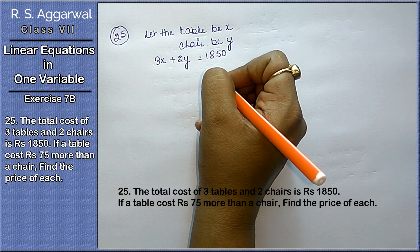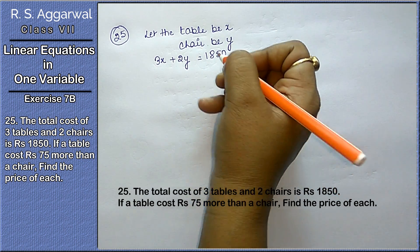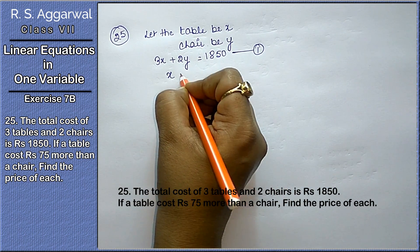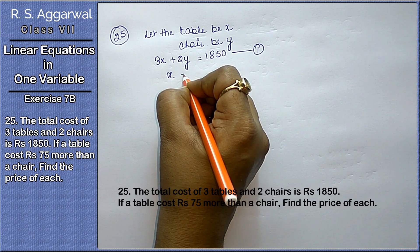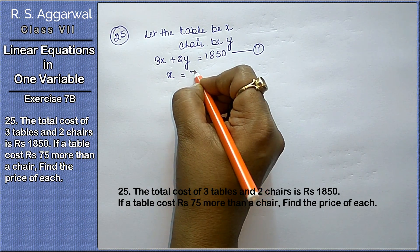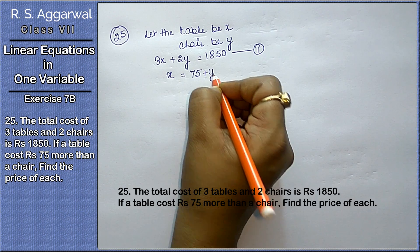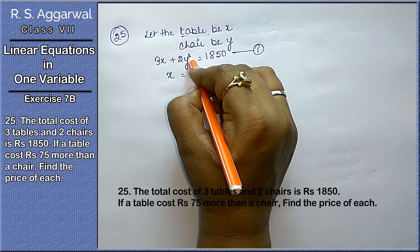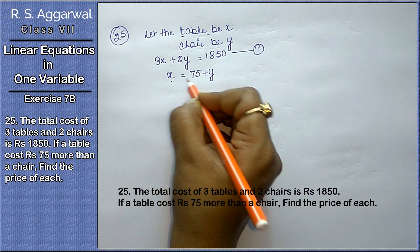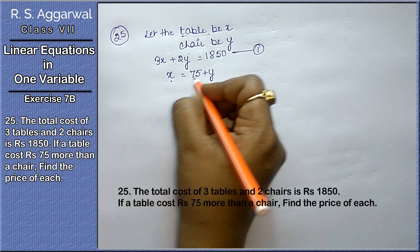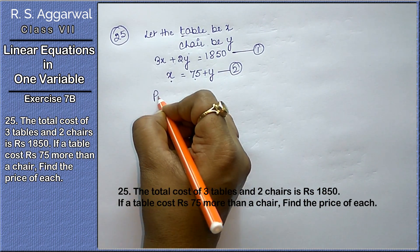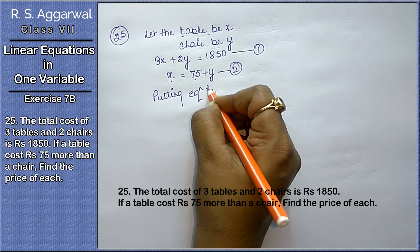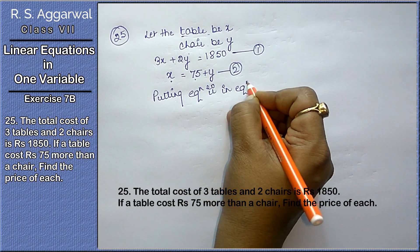Okay friends, this is the first equation. Now, if a table costs 75 more than the chair, then find the price of each. We have to find out the price of table as well as chair. Now x equals 75 plus y. This is the second equation. We'll put equation second in equation first.